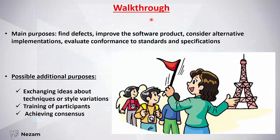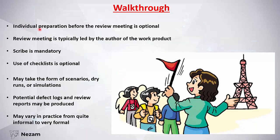The second review type is the walkthrough. Its main purpose is to find defects, improve the software product, consider alternative implementations, and evaluate conformance to standards and specifications. Additional purposes include exchanging ideas about techniques, training participants, and achieving consensus. In a walkthrough, the leader is the author himself — for example, the product owner who wrote the requirements leads a meeting to explain them to the team.